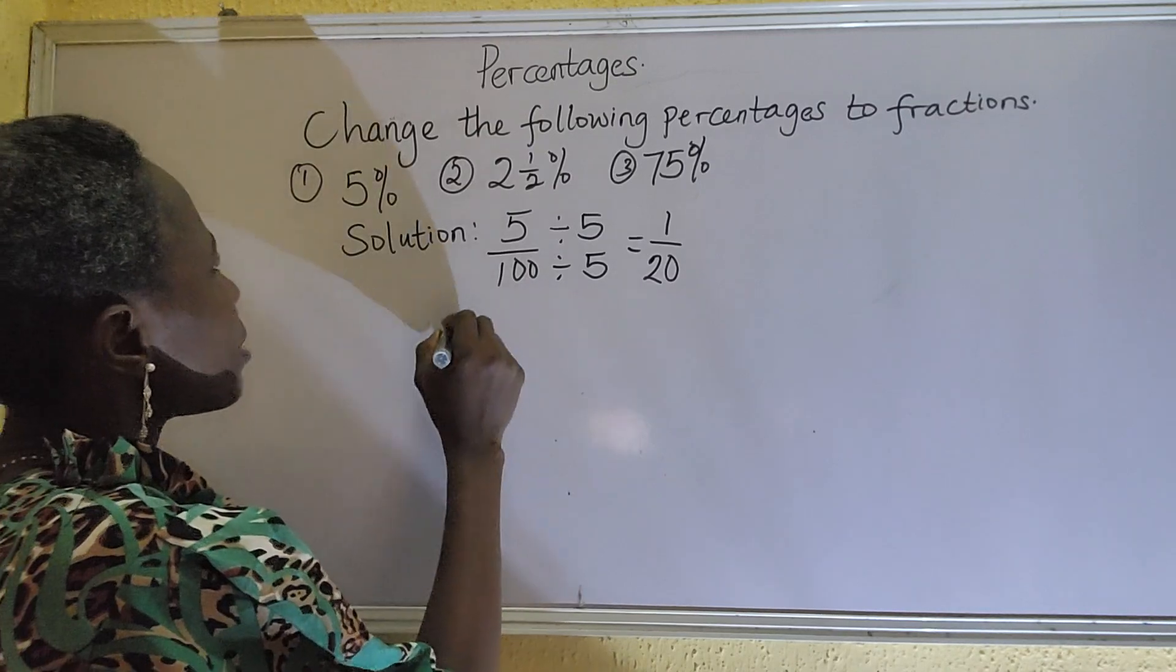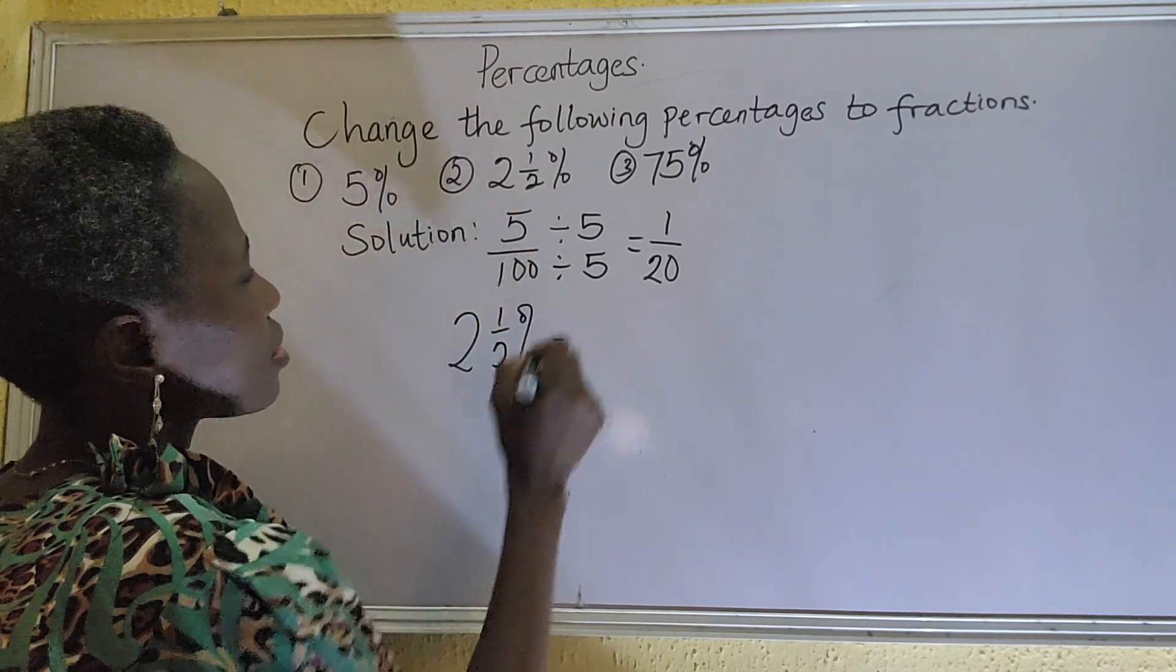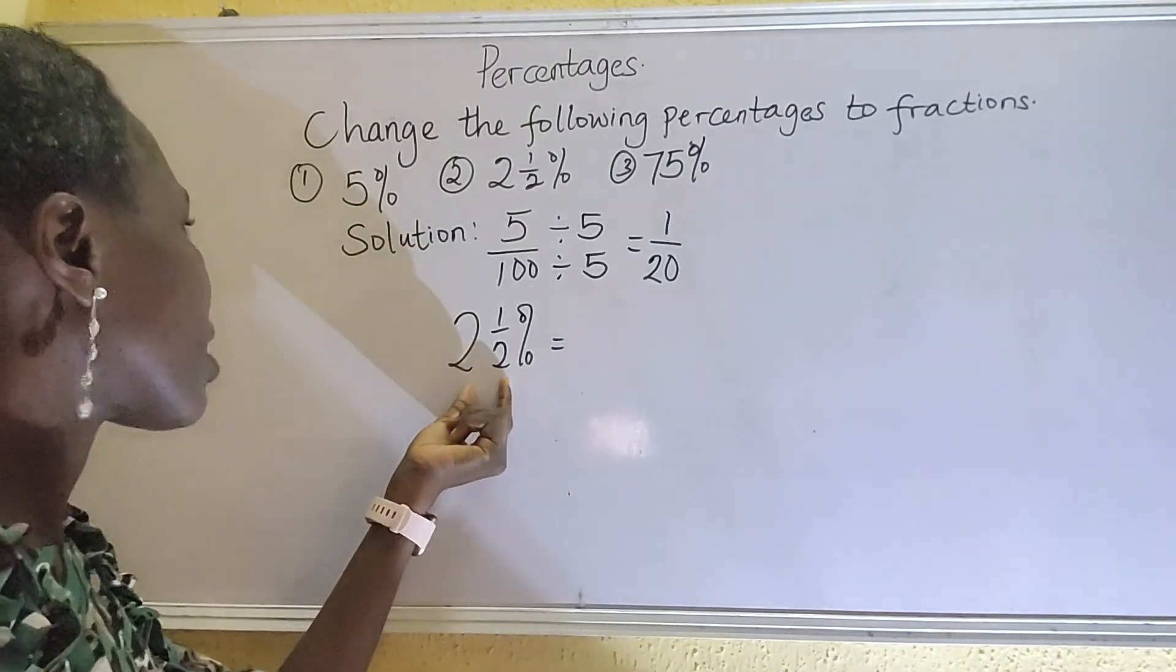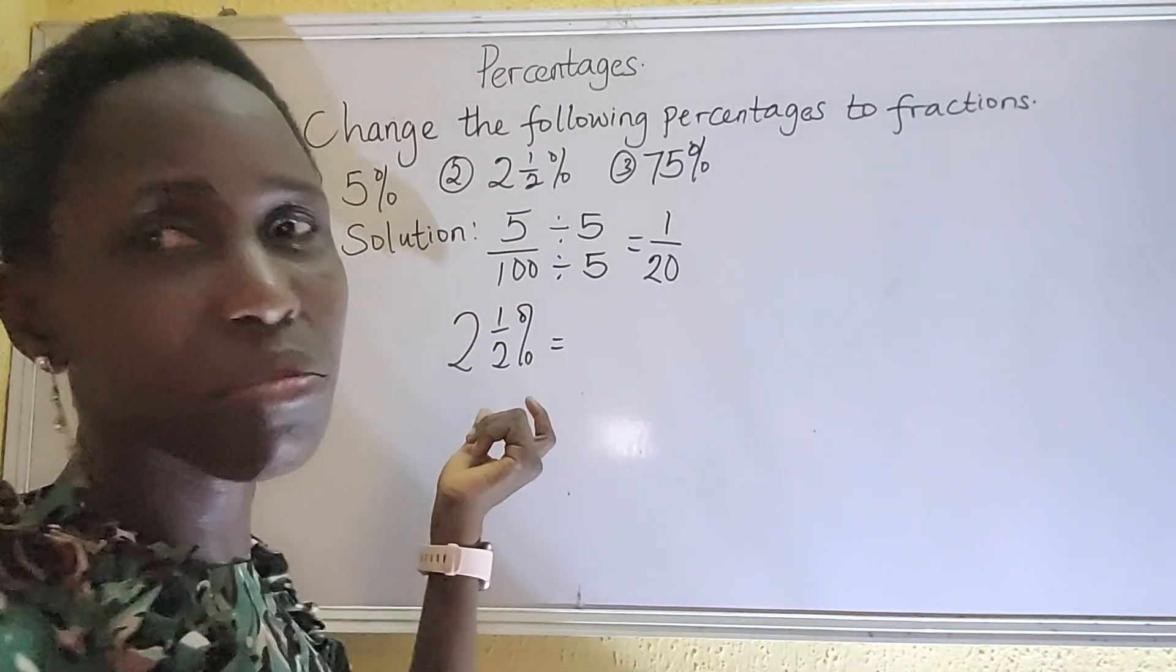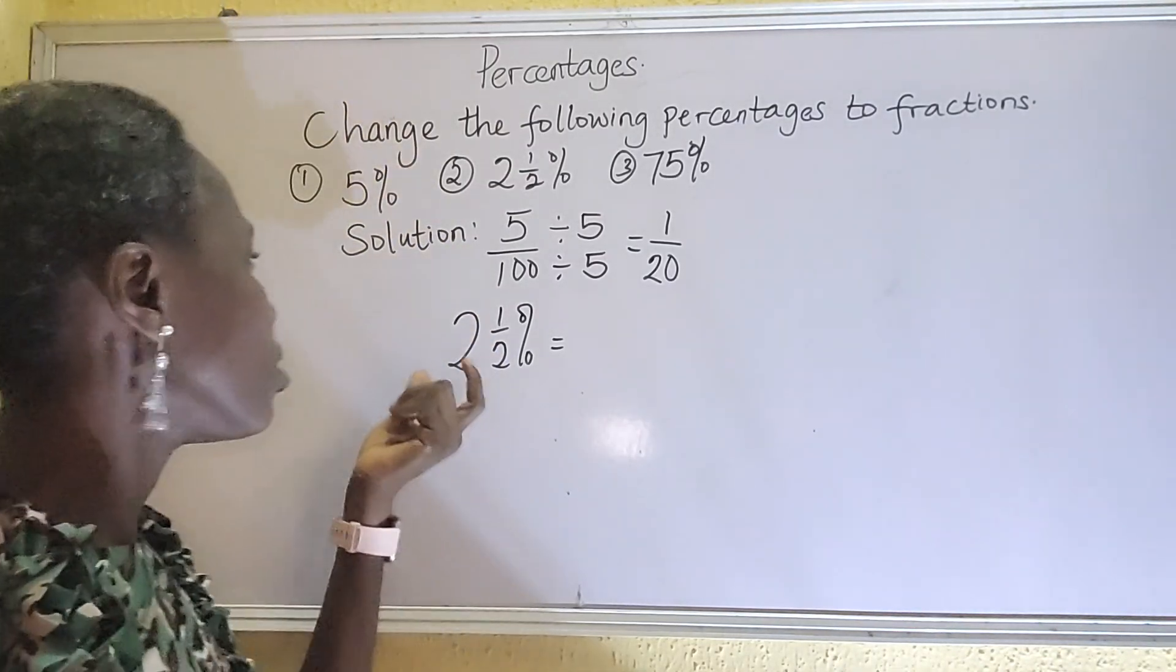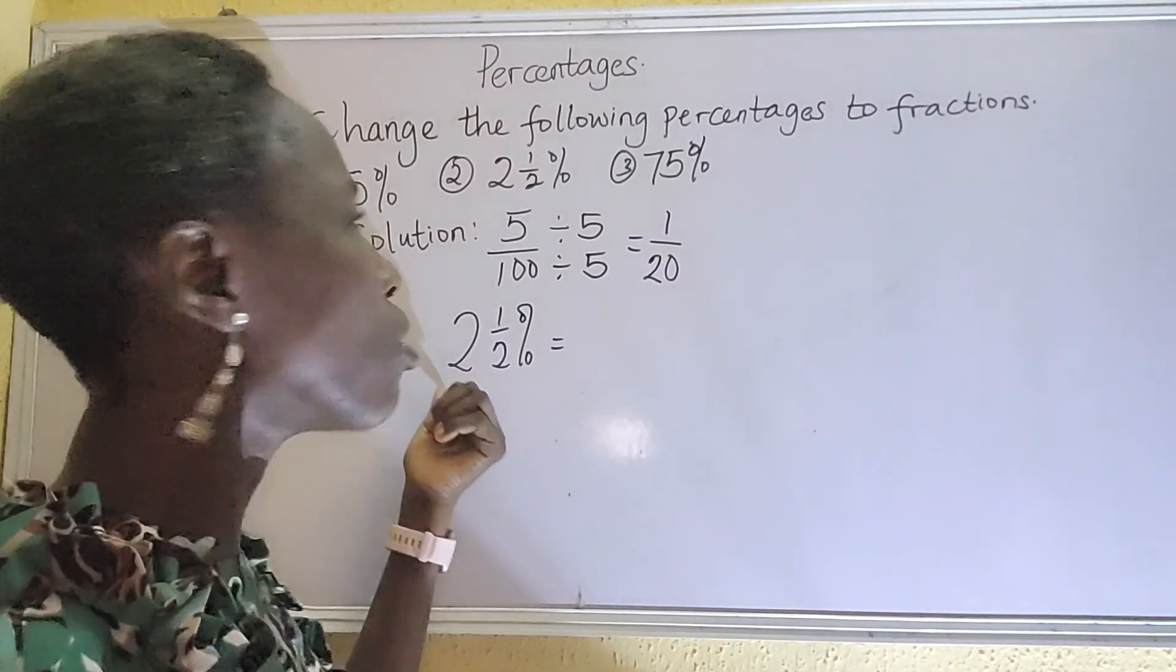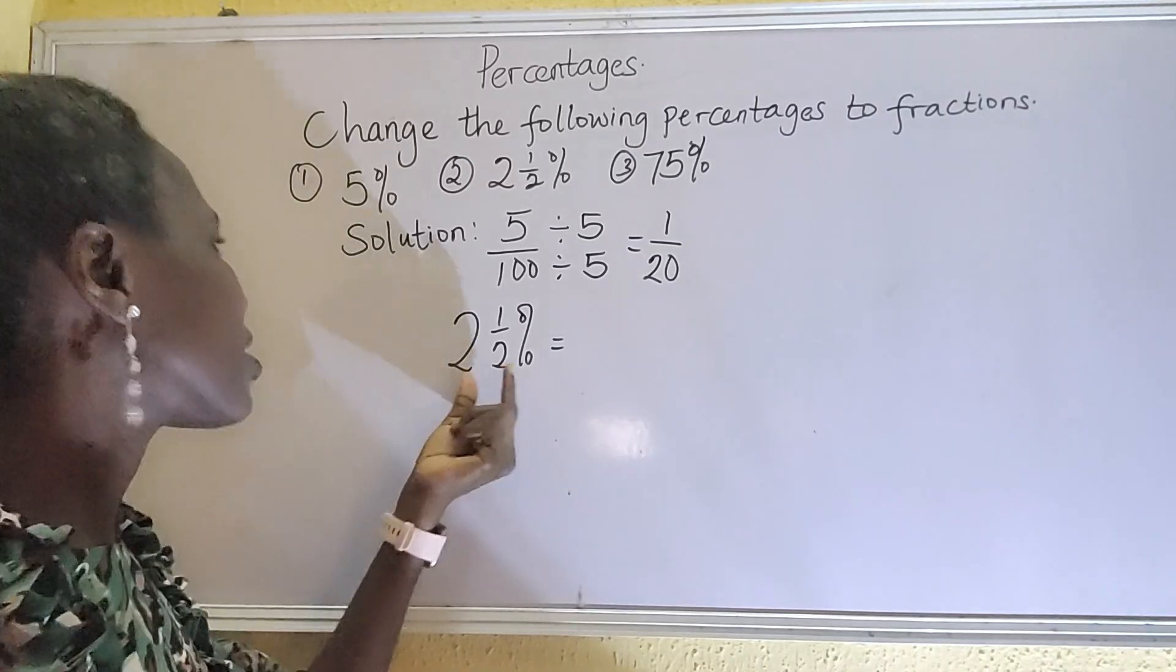Now let's go to the second question. We have 2 and a half percent. The very first thing you do here is to ensure that this particular 2 and a half percent is a mixed fraction. It's having both the whole number and a fraction. That's why I call it mixed. Now it's still going to be over 100.